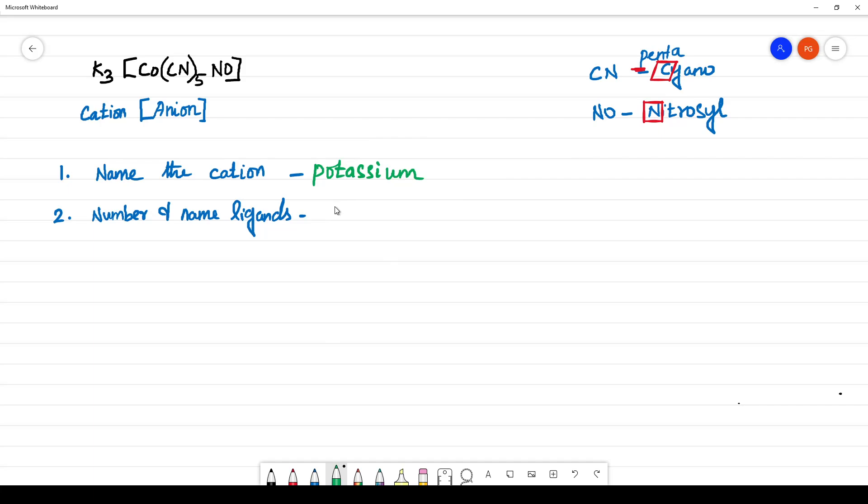This will be penta. See, penta you have to add the prefix but while writing the name of the ligands, you have to consider the name of the ligand not the prefix or suffix. So C will come first then will come N. Penta cyanone nitrosyl.